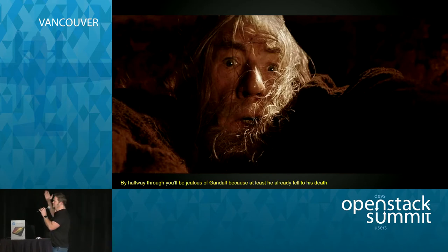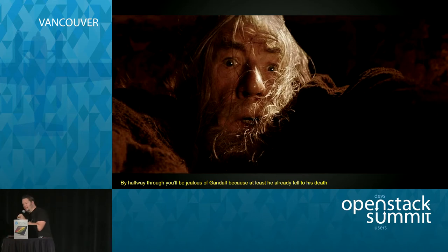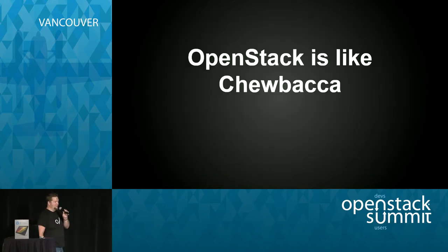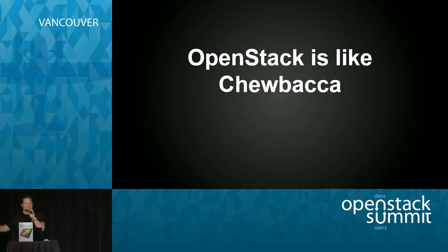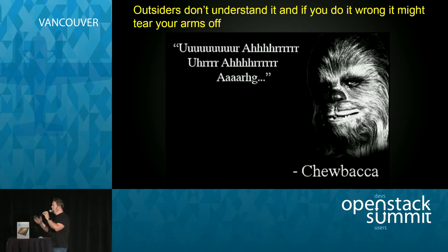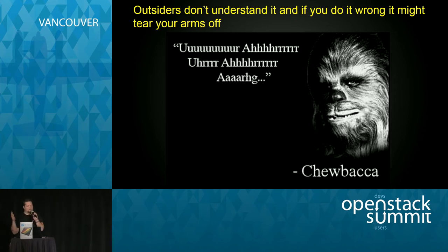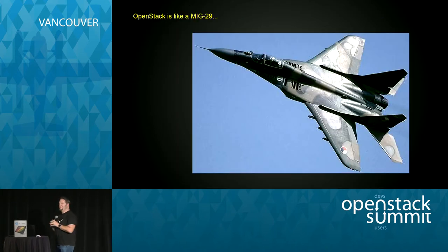It's like a Lord of the Rings viewing party because by halfway through this, you will be jealous of Gandalf for having fallen to his death about halfway through. Now I have a question: does anybody know why OpenStack is like Chewbacca? There's zero content in this presentation, so you're welcome. OpenStack is like Chewbacca because outsiders don't understand a word it says, and if you do it wrong, it'll probably tear your arms off.